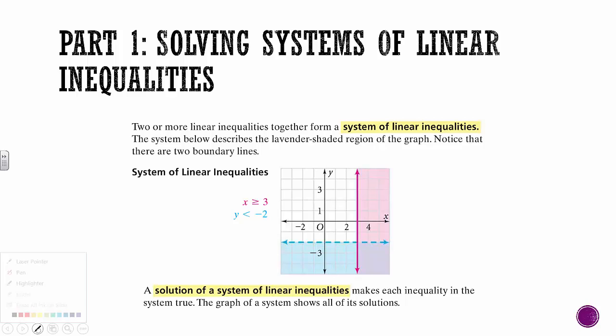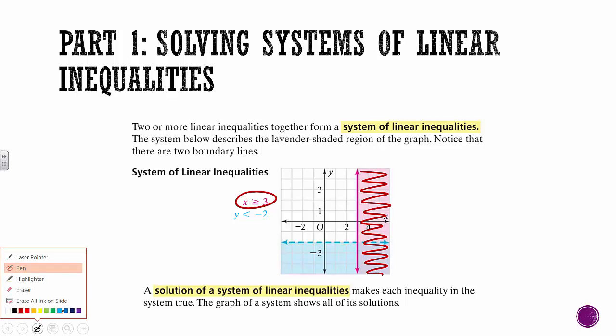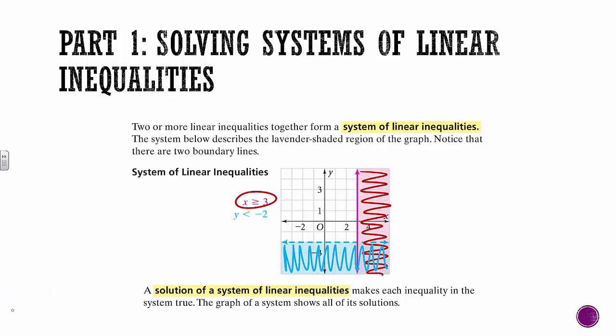With this one, we graphed two different equations on the same grid. This pink one right here includes all the areas over here, and then the blue one included all the areas down here. So the solution to this system is where those two areas overlap.